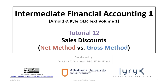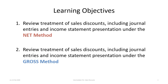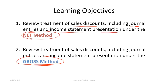Hello and welcome to Intermediate Financial Accounting 1 Tutorial 12. In this tutorial, we will look at how to account for sales discounts under two methods: the net method and the gross method. There are two learning objectives. The first is to review the treatment of sales discounts, including the journal entries and income statement presentation under both methods.